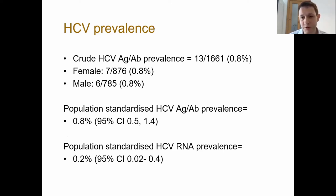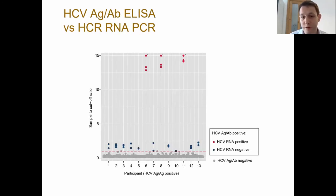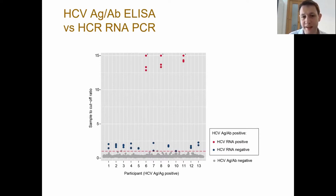La prévalence était de 0,8% selon les tests d'antigènes et d'anticorps. Parmi ceux-ci, nous avons cherché à confirmer la prévalence de l'ARN du VHC. La prévalence dans la communauté était de 0,2%, avec un intervalle de confiance à 95% entre 0,02 et 0,4%. Si vous regardez les 13 patients positifs aux tests d'antigènes et d'anticorps, trois individus étaient positifs à l'ARN du VHC avec un ratio échantillon C beaucoup plus élevé. La plupart des positifs de bas niveau étaient négatifs à l'ARN testé par PCR.